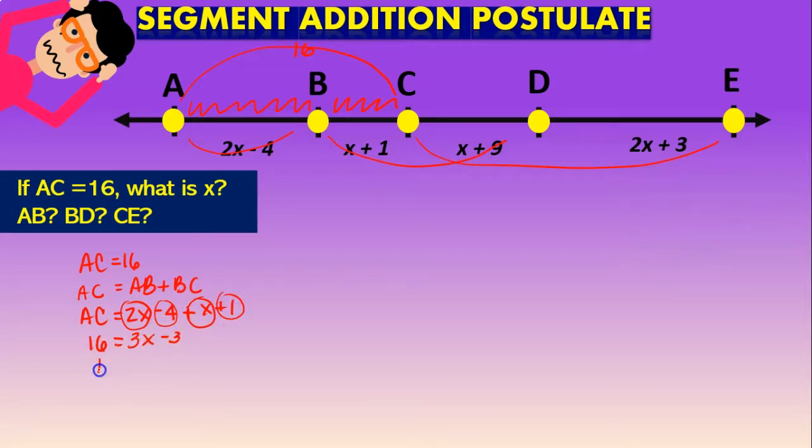Now, that is going to be 16 plus 3 is equal to 3x. Now, that is going to be 19 is equal to 3x. And x is going to be equal to 19 divided by 3. So in this case, our value for x is approximately 6.3 meters.